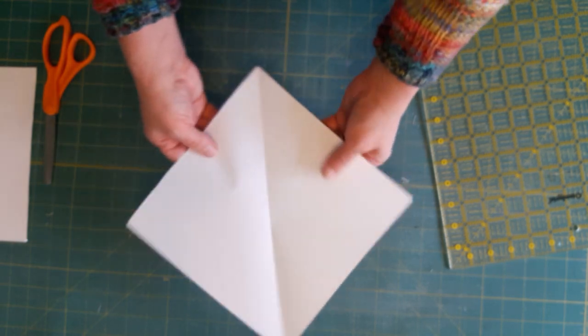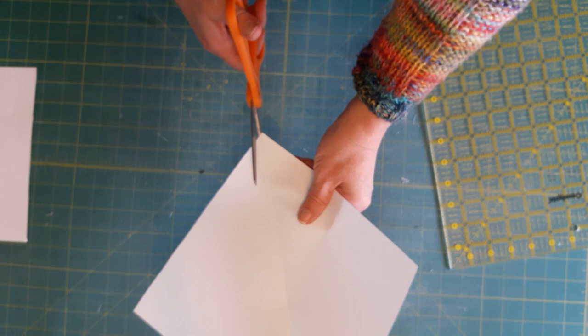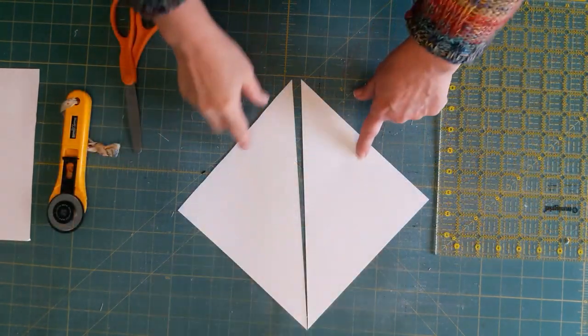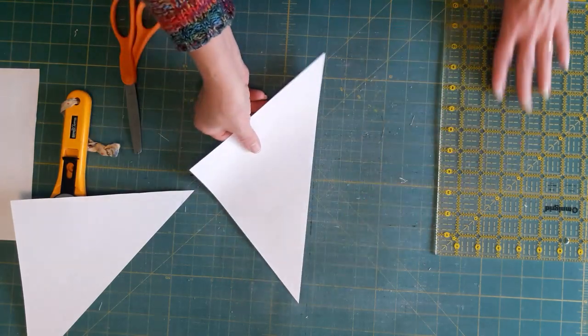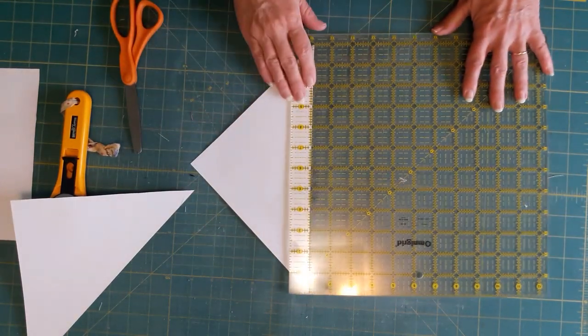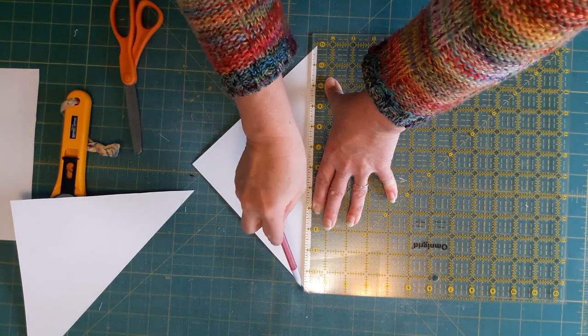Then I'm also going to cut along this fold line here, so I have this triangle. Along this edge I want to measure a quarter inch, and I'm going to draw a line there.